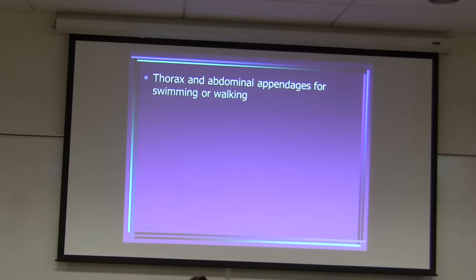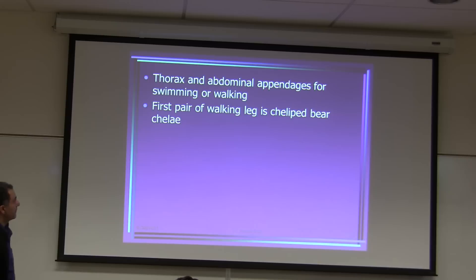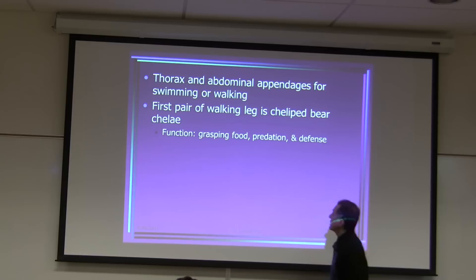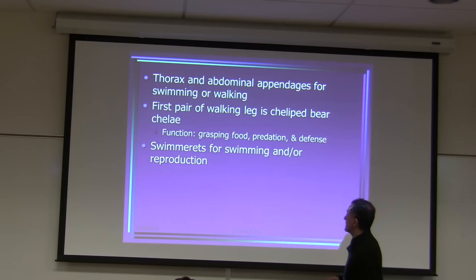The thorax and abdominal appendages are used for walking or swimming. The first walking leg is called a chelipede, or verichilla, which I will show you a picture of. The function is for grasping food, predation, and defense. After the walking legs, they have swimmerets for swimming and reproduction.